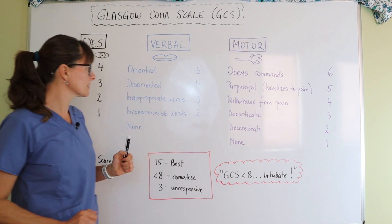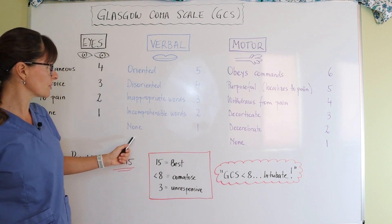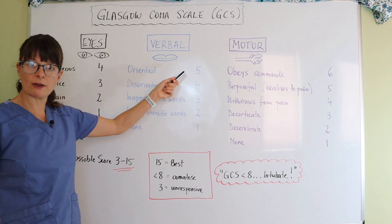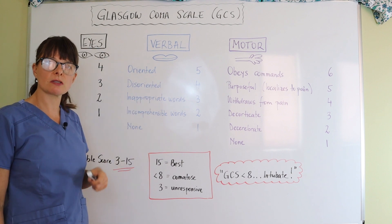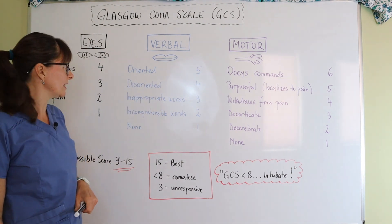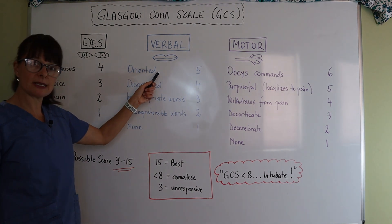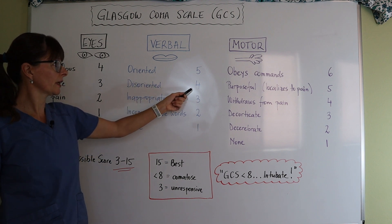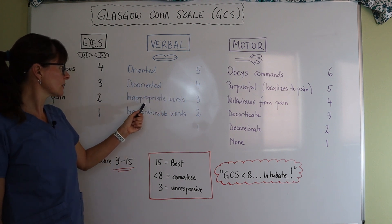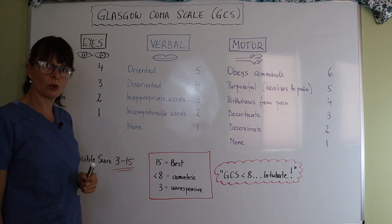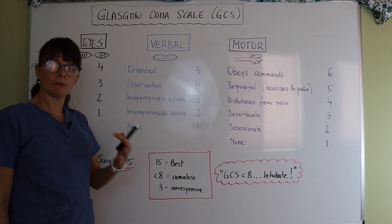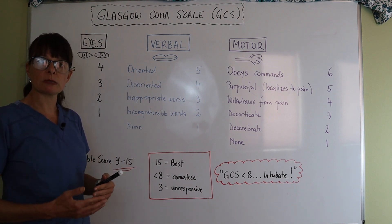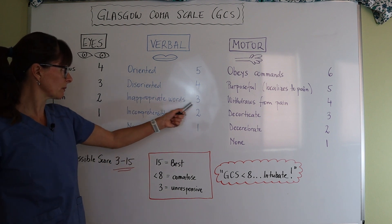For the verbal response, there is a scale of one to five. If the patient is oriented, they get a score of five, meaning we ask all four orientation questions: orientation to person, place, time, and event. If they answer less than four of the orientation questions correctly, they are disoriented and get a score of four. If they respond with inappropriate words — for example, you ask what happened to you and they say 'my brother' — that would be an inappropriate response and assigns them a score of three.